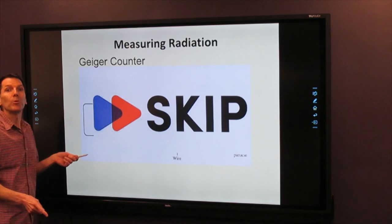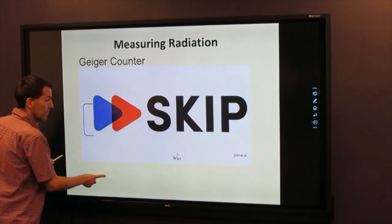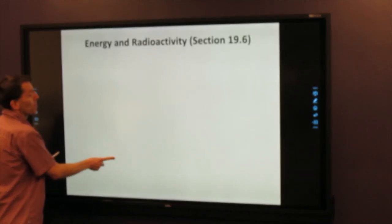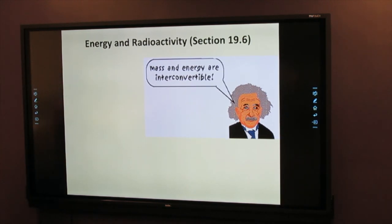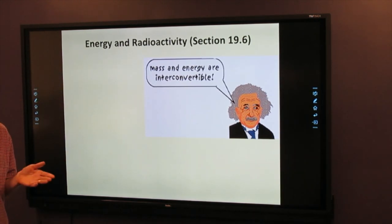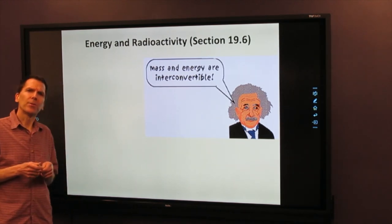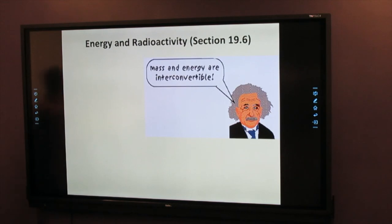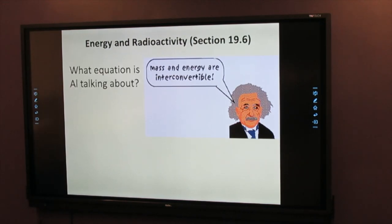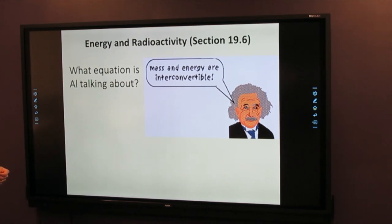There's a picture of Einstein, or sketch, not a picture. He said mass and energy are interconvertible. What equation is he talking about there? It's the most famous equation in science. I tell people it's the only one you can put on a t-shirt. It's so famous. He's talking about E equals MC squared.